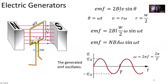So here's our motional EMF again, just coming from these sides here, not the ones on top. From last semester when we were talking about rotational motion, our angle around a circle is equal to our angular speed times time — that's what omega is here. Our linear speed is equal to the distance away from the pivot times the angular speed.